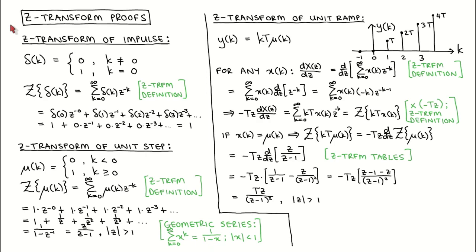On this page, we prove the Z-Transform of three common discrete time signals: the impulse, the unit step, and the unit ramp.